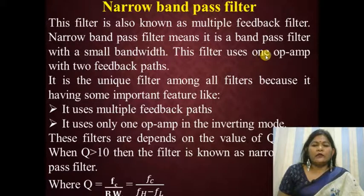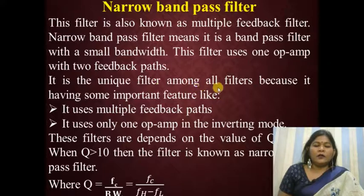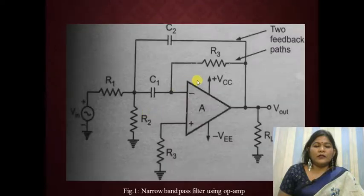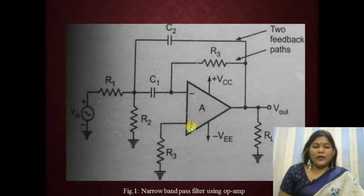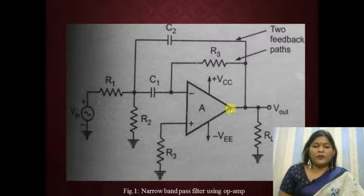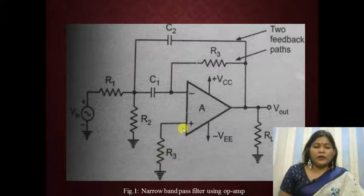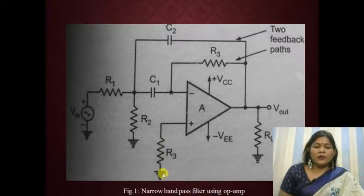This filter has one op-amp with two feedback paths, making it a unique filter among all others. Here is the narrowband pass filter circuit using an operational amplifier. You can choose any general purpose op-amp IC to design this multiple feedback filter. The non-inverting terminal of the op-amp is grounded, either directly or through a resistor.